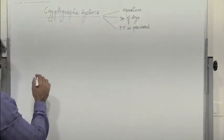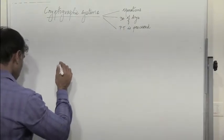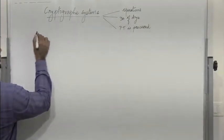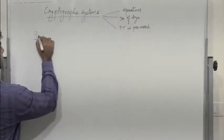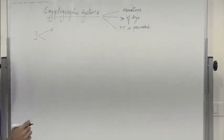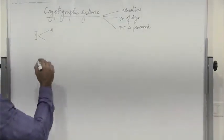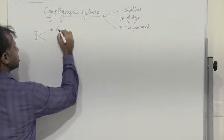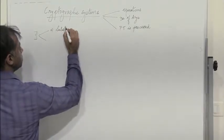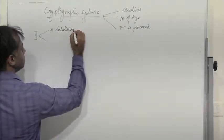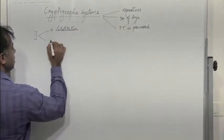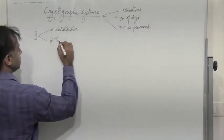Let's talk about the type of operation. When we talk about the type of operation, there are two ways. The first one is known as substitution, and the second one is known as transposition.